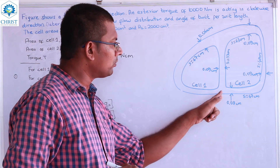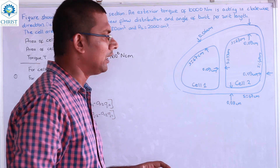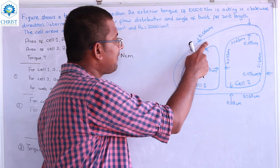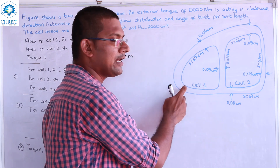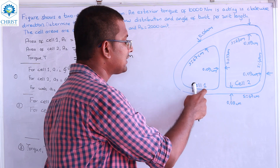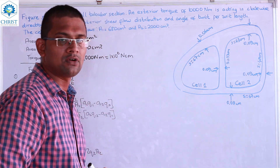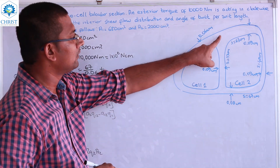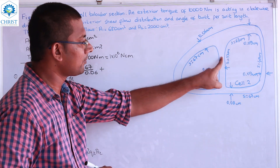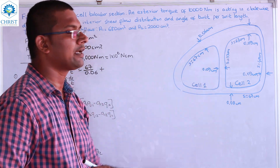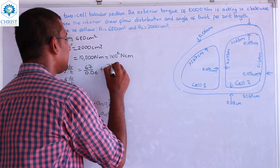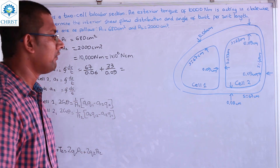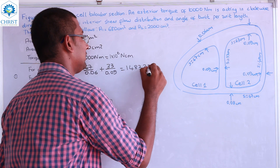In the figure, there are three boundaries for cell 1 with three dimensions. The length S is 67, thickness 0.06, giving 67/0.06. Plus, length 67 with thickness 0.09. Plus, length 33 divided by 0.09. Solving this, the value of A1 equals 1483.33.